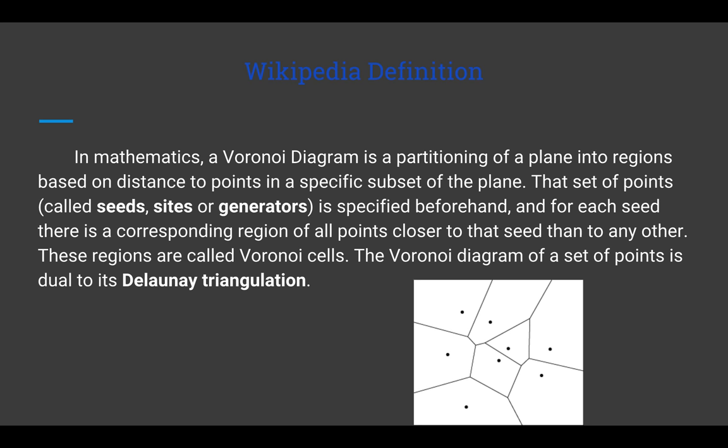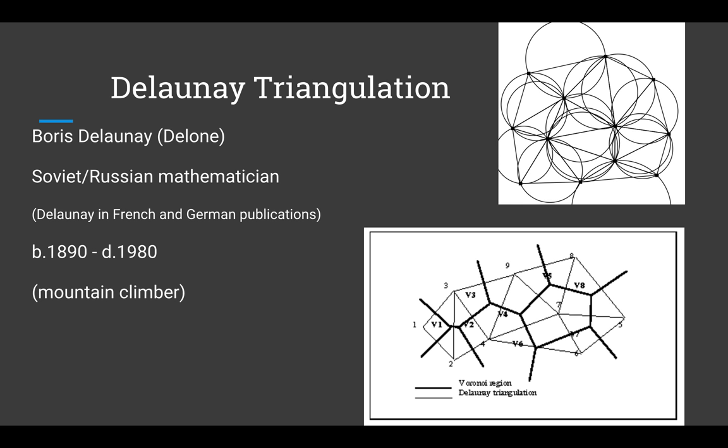Who is Delaunay? Boris Delaunay, as known in his French and German papers, was a Soviet Russian mathematician. Delone was his Russian name. He lived to age 90 and was incidentally also a mountain climber.